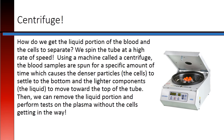How do we get the liquid portion of the blood and the cells to separate? We spin the tube at a high rate of speed. Using a machine called a centrifuge, the blood samples are spun for a specific amount of time, which causes the denser particles — the cells — to settle at the bottom, and the lighter components — the liquid — to move toward the top of the tube. Then we can remove the liquid portion and perform tests on the plasma without the cells getting in the way.